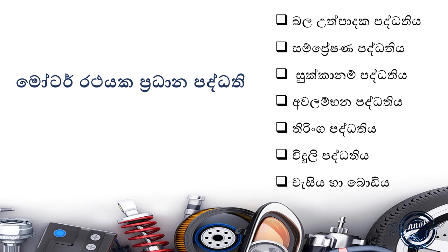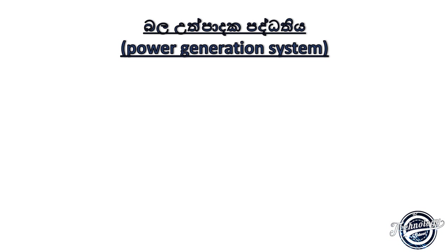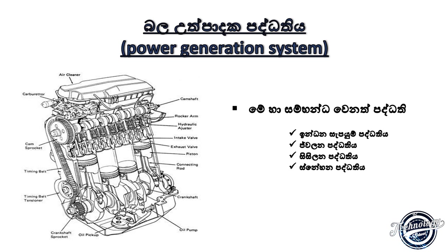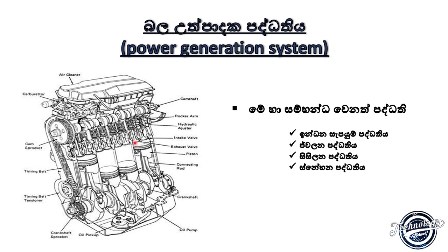The power generation system is used by the engine and motor. This engine is used for the engine, and one can be used to drive the engine. This engine is used for diesel and petrol.